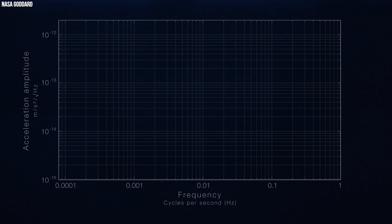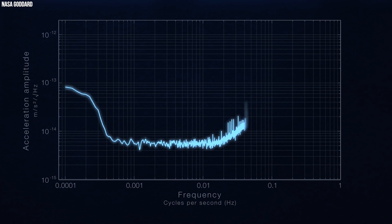LISA will encompass wavelengths spanning millions to billions of miles, comparable to the distance from Earth to the Sun, or the distance from Earth to Pluto. The periods of these gravitational waves endure from seconds to hours.